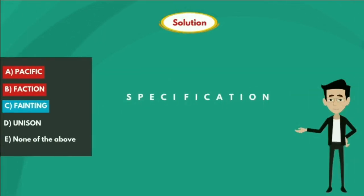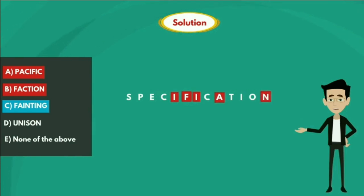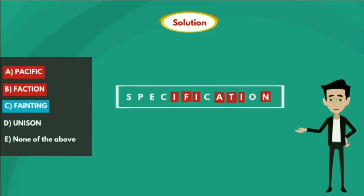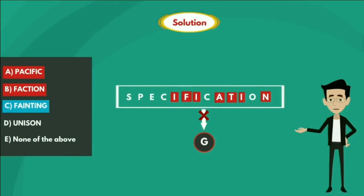Option C - FAINTING. If we observe the given option, the letters F-A-I-N-T-I-N-G are checked against the given word SPECIFICATION — except the letter G, which is not present. So this is the word which cannot be formed using the letters of SPECIFICATION. So option C is true.